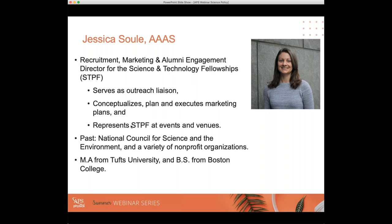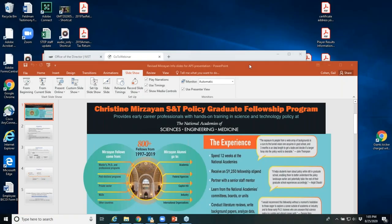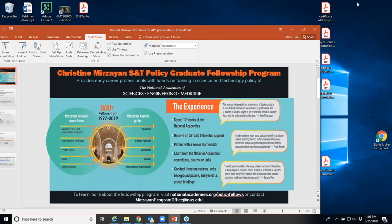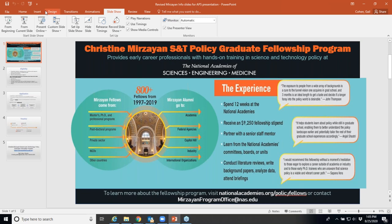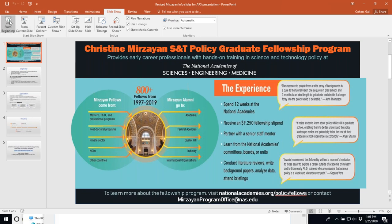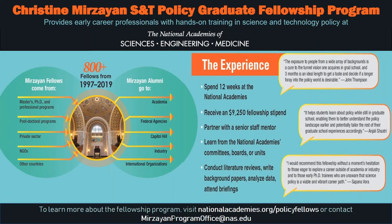I am now going to hand it over to our first speaker, Dr. Cohen. Thank you very much. I'm here to talk about the Christine Marzayan Science and Technology Policy Graduate Fellowship Program. This is a program that's been in existence since 1997. It's a multi-part program — it's only 12 weeks. I think of the Marzayan Program as a feeder program into AAAS and into the PMF program. Since the beginning, we've had over 800 fellows go through the program.